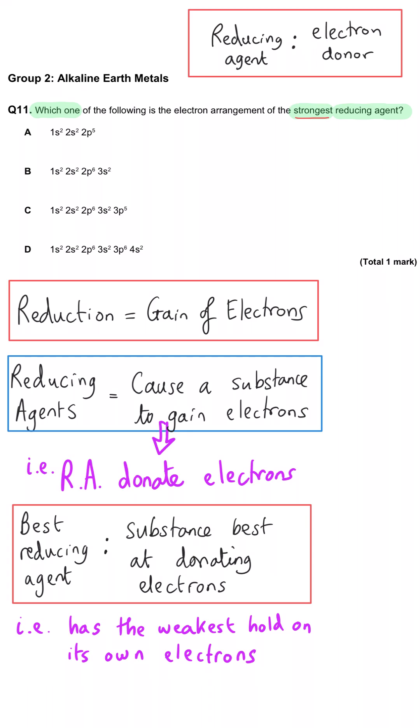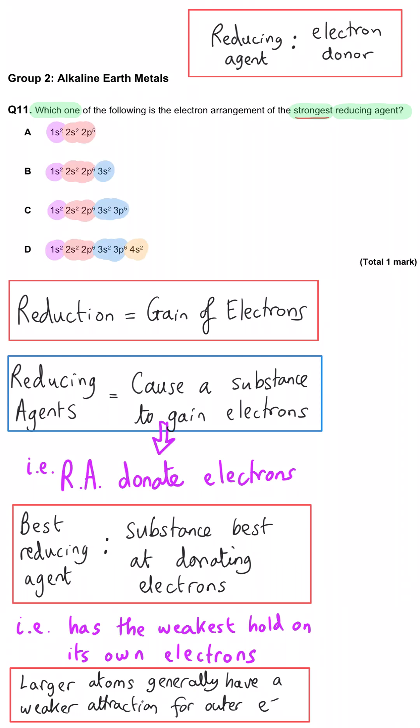As we know, as an atom gets larger and its outer electrons get further from the nucleus, those outer electrons are lost more easily because they've got less of an attraction to the nucleus and the nucleus is shielded.